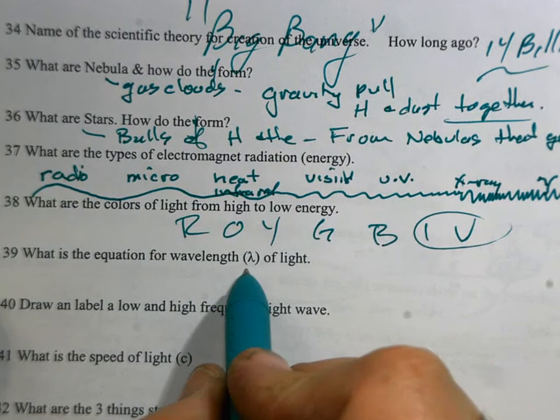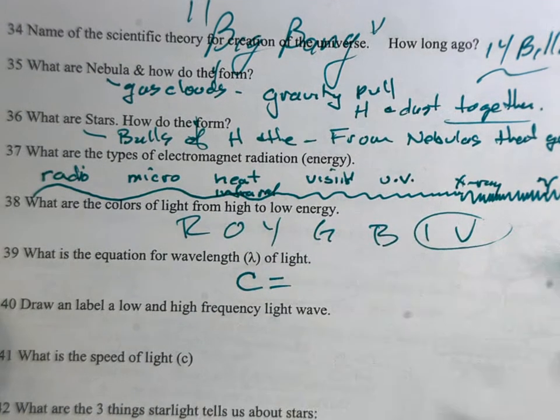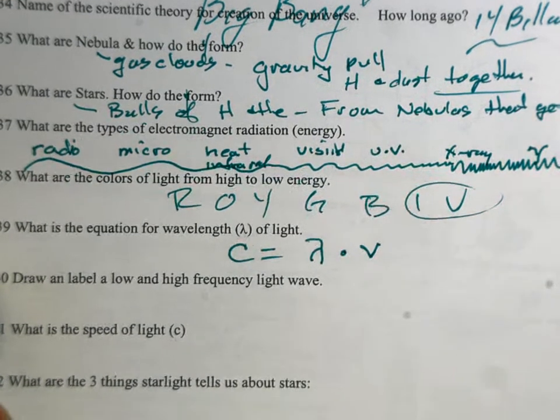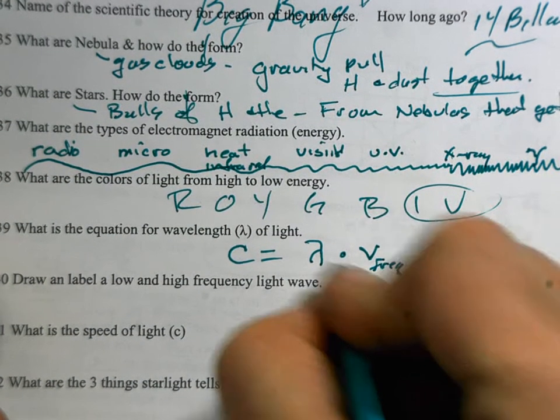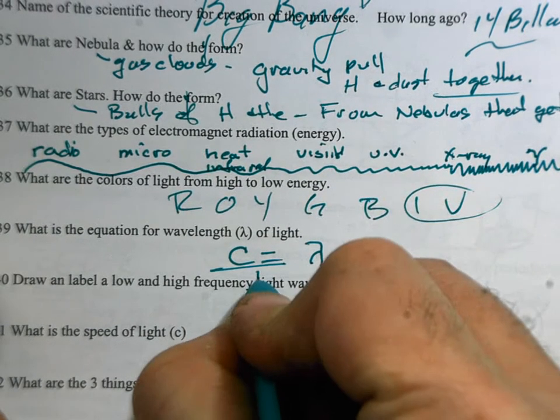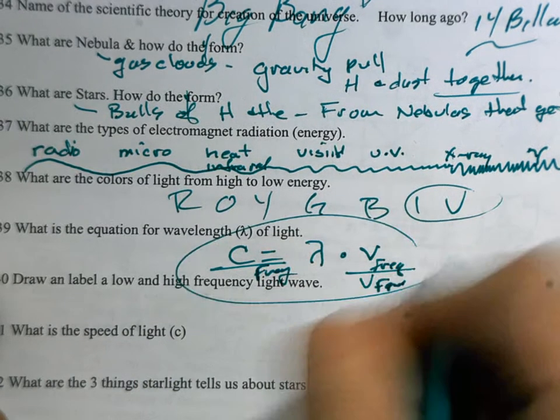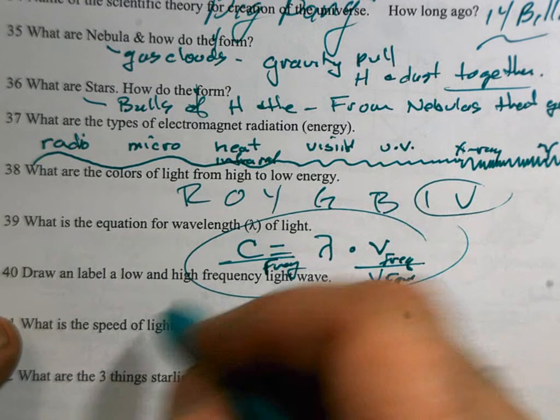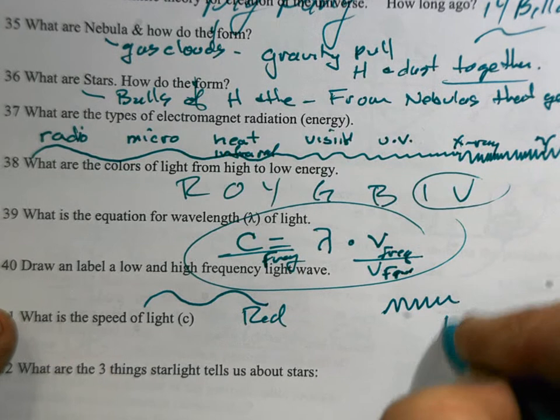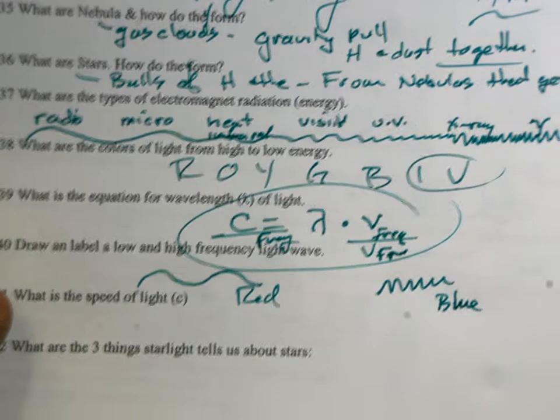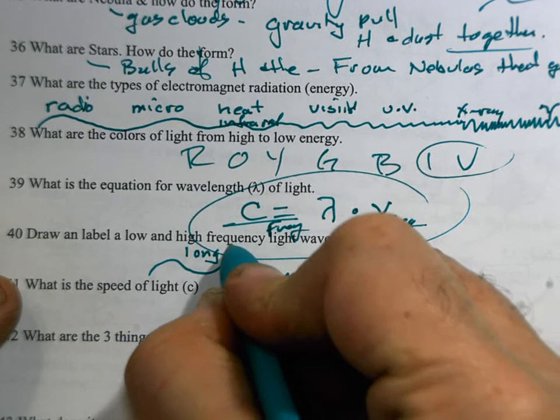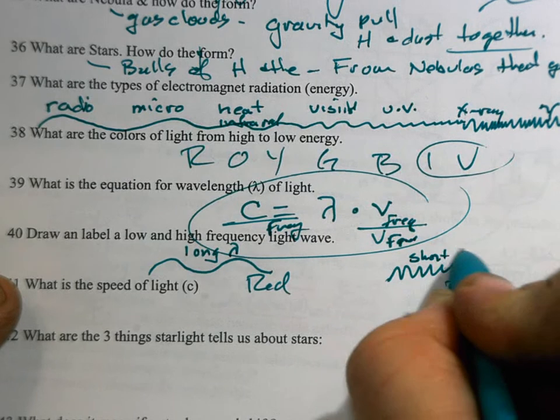What's the equation for wavelength? From your notes, we said the speed of light, c, is equal to wavelength times the frequency. I'm using the symbols for those. And so you just got to divide both sides of the equation by frequency. And then there's your equation. Which I think you got that one on the quiz. Draw and label low and high frequency light wave. There's a low frequency like red. There's a high frequency like blue. Long wavelength. And short wavelength. I'm using the Greek letters for wavelength there.